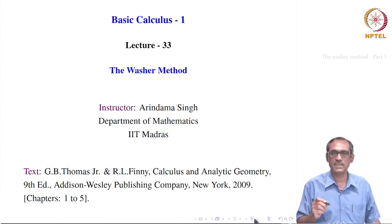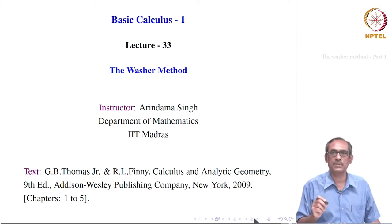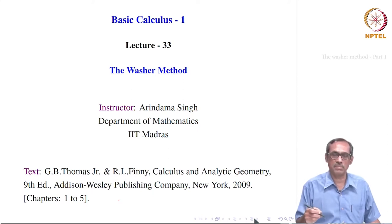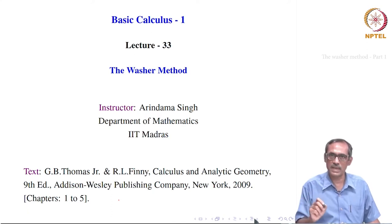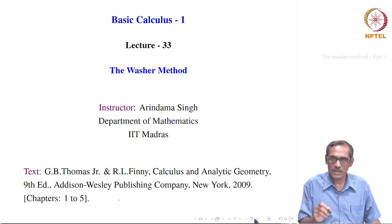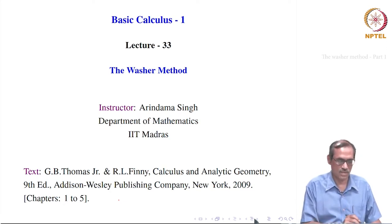This is lecture 33 of Basic Calculus 1. As you remember, we were discussing how to compute volumes of solids of revolution. We had discussed the slice method, and a modification of it for solids of revolution gives the disk method. In the disk method, the condition is that the axis of revolution should be bordering the region being revolved. Suppose the axis of revolution is not bordering it or even not crossing it — then what to do? Today we will be discussing that, and it is called the Washer method.